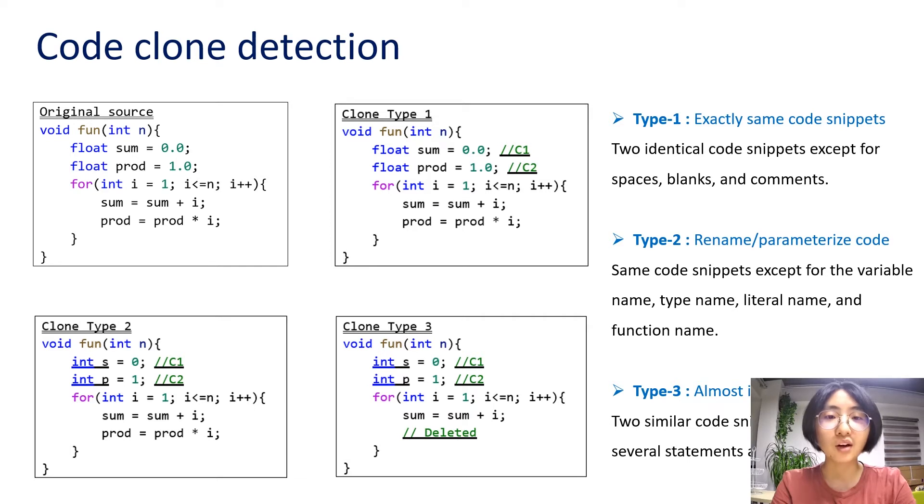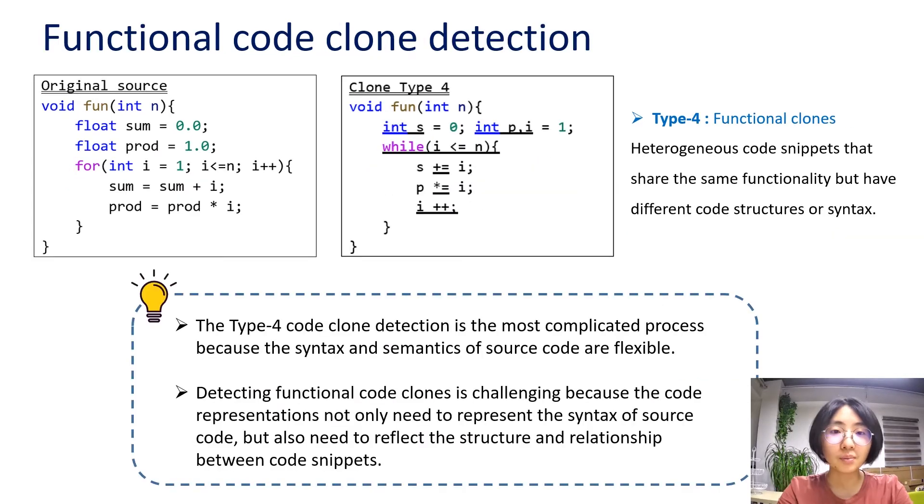This is, the functionality of type 3 code clone may not be the same as the source code, but they are quite similar. Type 1, type 2, and type 3 code clone are well detected by many existing approaches. These are also not the focus of our research. Our proposed method is mainly used to solve the type 4 code clone, that is functional code clone detection.